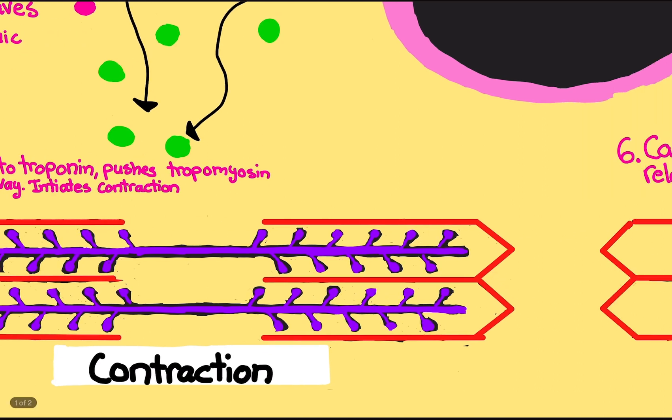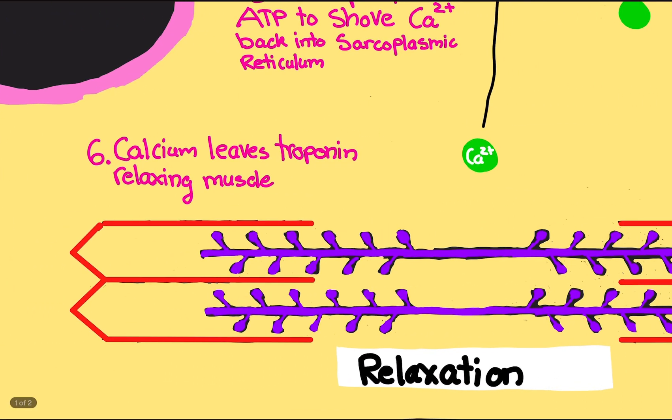Now to relax the cell, calcium leaves troponin, relaxing the muscle. Calcium says alright I'm done and leaves troponin.